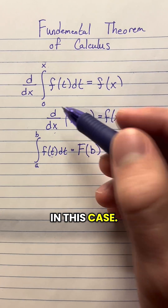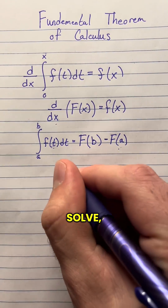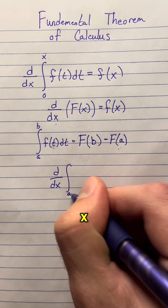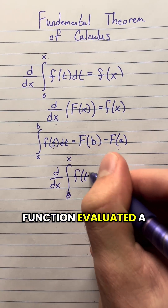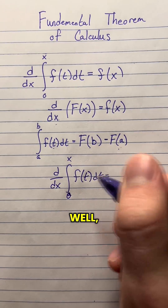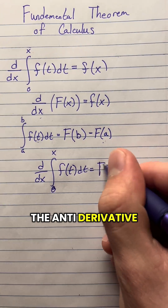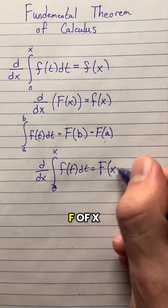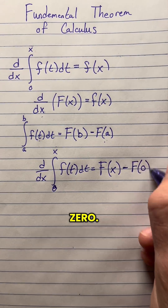In this case, this means that this problem is super easy to solve. Because if we are trying to find the derivative with respect to x from 0 to x of our function evaluated at t dt, the integral of this is just going to be the antiderivative of this function at the top bound, which is F of x minus F of 0.